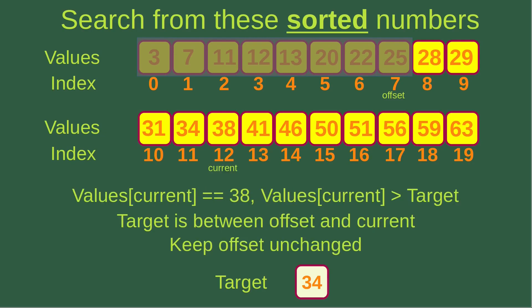The current index is now at index 12, which corresponds to a value of 38, which is actually larger than the target 34. In this situation, the target is between the offset and the current index, so I don't have to change the offset index. I just keep it unchanged and focus on the values between offset and current.